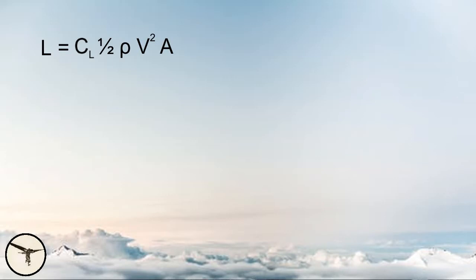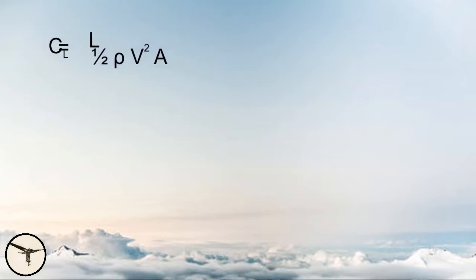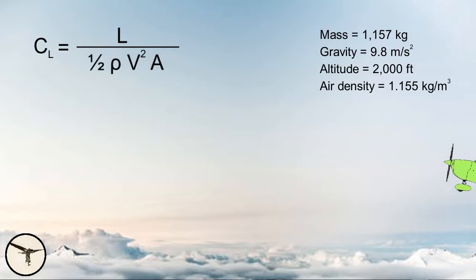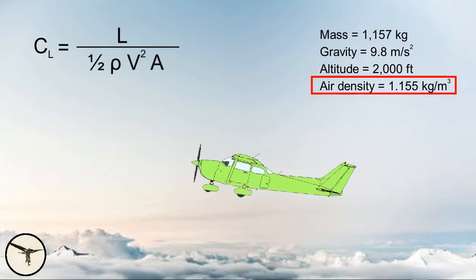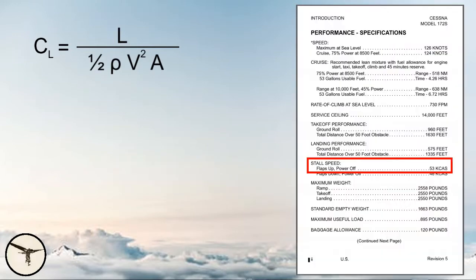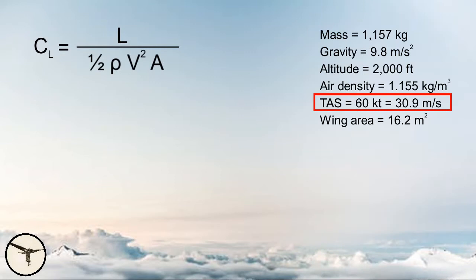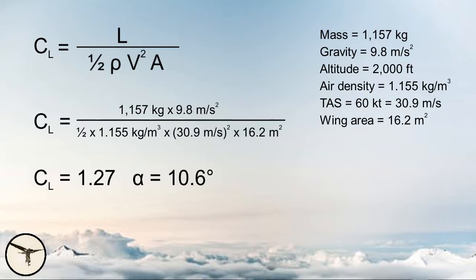When looking at the lift formula, we can easily determine all factors except the lift coefficient, which appears to be a mystery for many. Therefore, we will rearrange the formula so we can calculate the lift coefficient. For the first calculation, we will fly at slow speed at maximum weight at 2,000 feet on a standard day. The air density is 1.155 kilograms per cubic meter. According to the POH, the stall speed is 53 knots calibrated airspeed, which is a true airspeed of 55 knots at 2,000 feet. We add 5 knots for safety and fly at 60 knots true airspeed — that's 30.9 meters per second. This gives a lift coefficient of 1.27 and an angle of attack of 10.6 degrees.